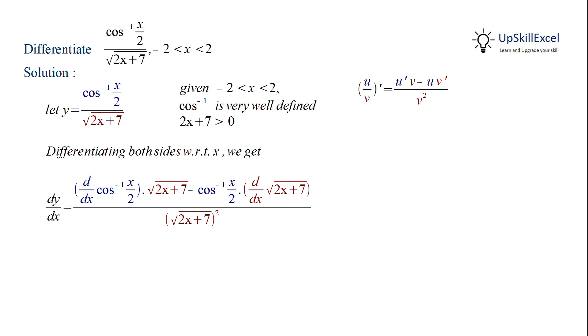Now we know that derivative of cos inverse x is equal to minus 1 by root of 1 minus x square. Here x is equal to x by 2. So we will apply the chain rule formula to differentiate x by 2.